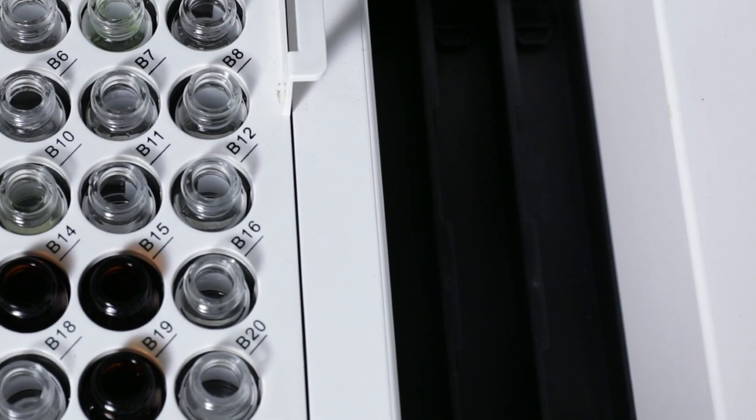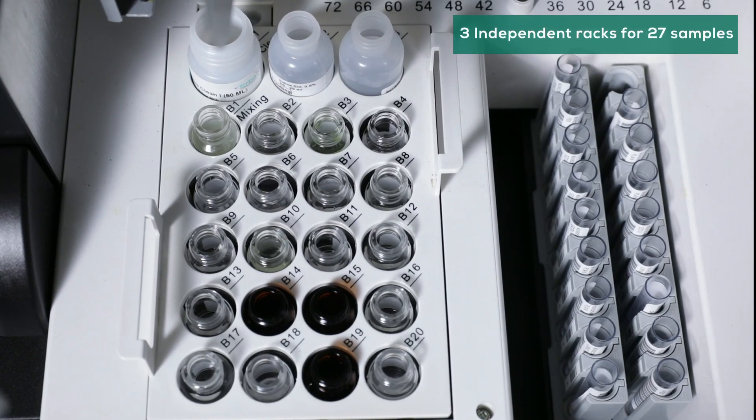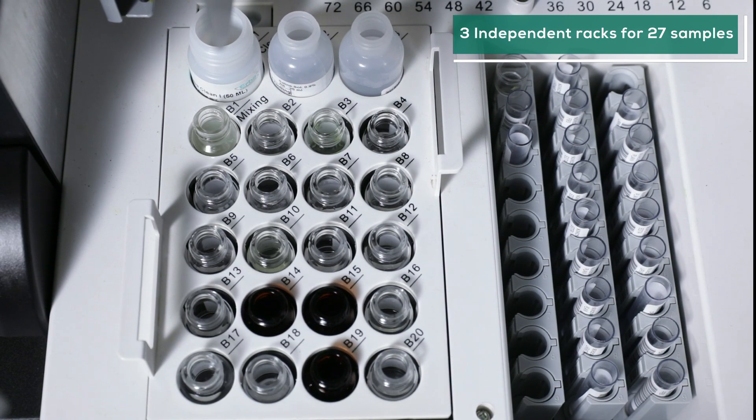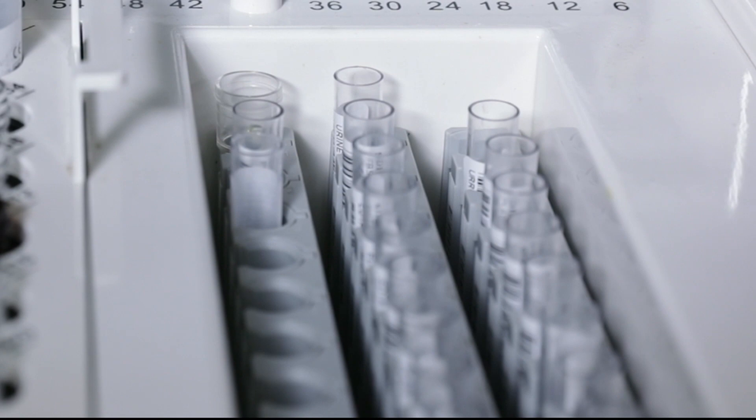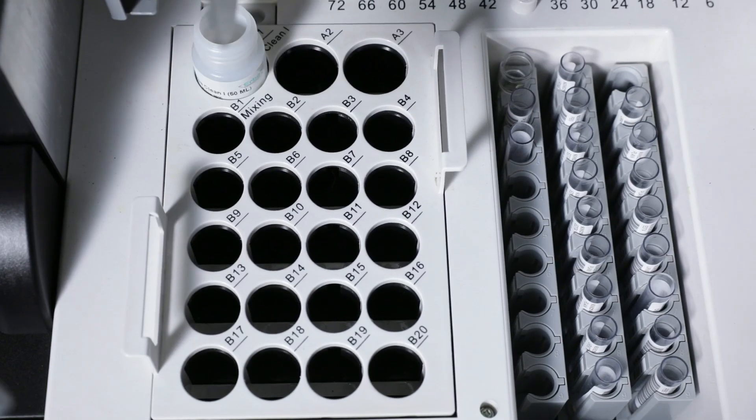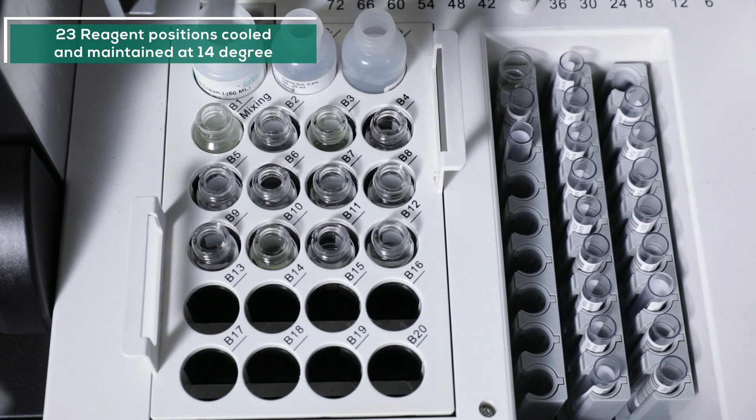With continuous loading capability, ECL760 comes with three independent racks for 27 samples. Sample tubes are barcoded for positive identification. Cooled and maintained at 14 degrees, 23 reagent positions are provided with a stirring facility.